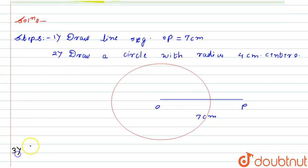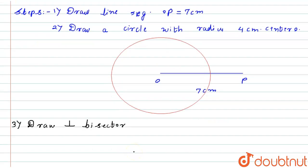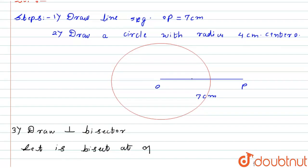The third step is to draw a perpendicular bisector of OP, and let it bisect at point M. So here I will draw the perpendicular bisector of OP, which cuts OP at point M.